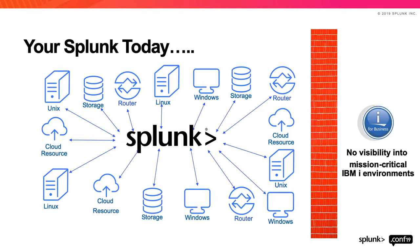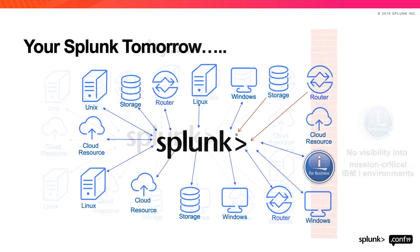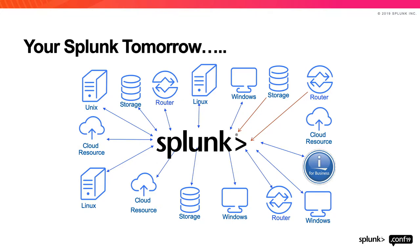Today with Splunk, all these different systems — cloud, network systems, Linux, Unix, Windows — you can get data from using typical Splunk forwarder technology, except you have that wall, that brick wall between the IBM I systems and the data you can get into Splunk today. So what we'll talk about is how do we get rid of that wall — take it down, get the data from those IBM I systems into Splunk so that you have a complete view of everything going on in your enterprise infrastructure.